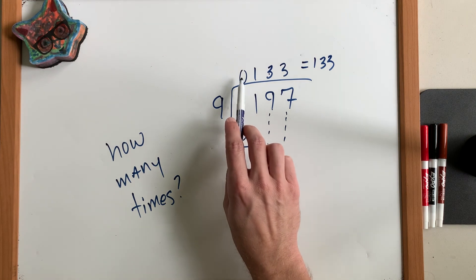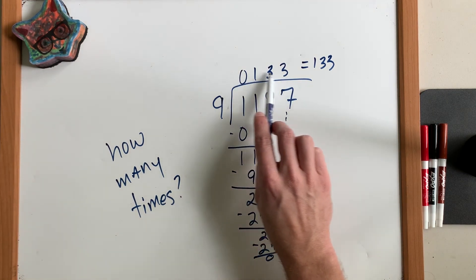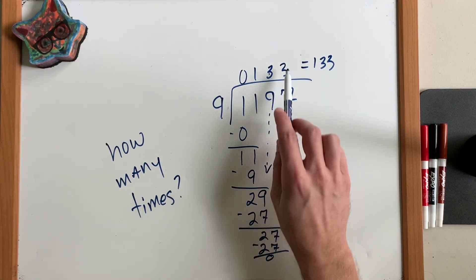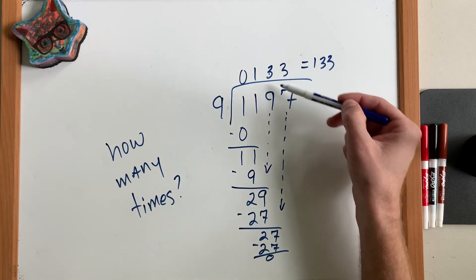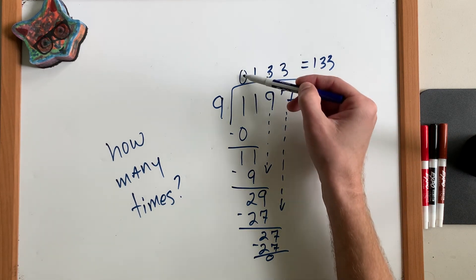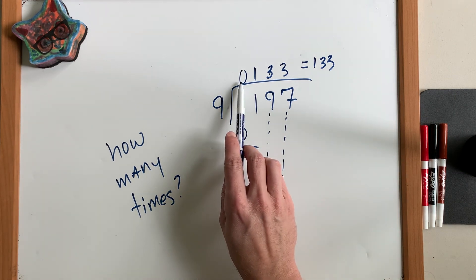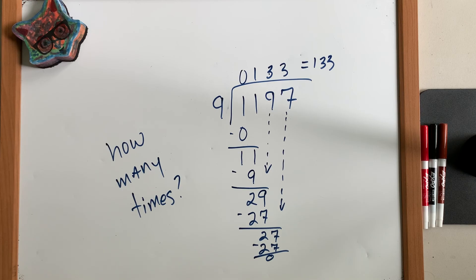Again, the 0 out front is just a placeholder. And it's very important that we keep these digits in line with the numbers in our dividend. So these numbers are in the 1s place. These are in the 10s. These are in the 100s. These are in the 1,000s. There is no value in the 1,000s place, which is why we can just write 133.